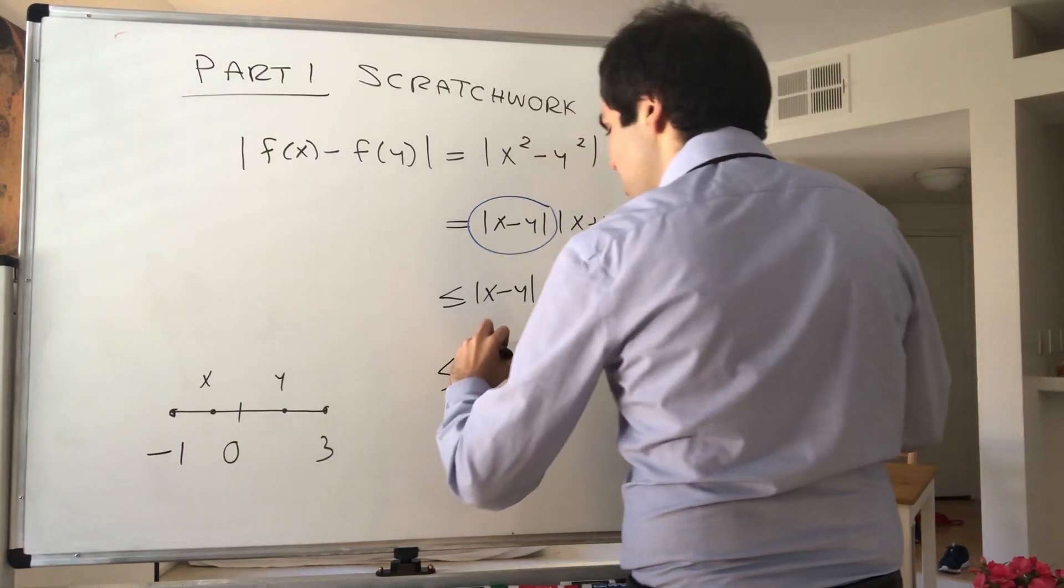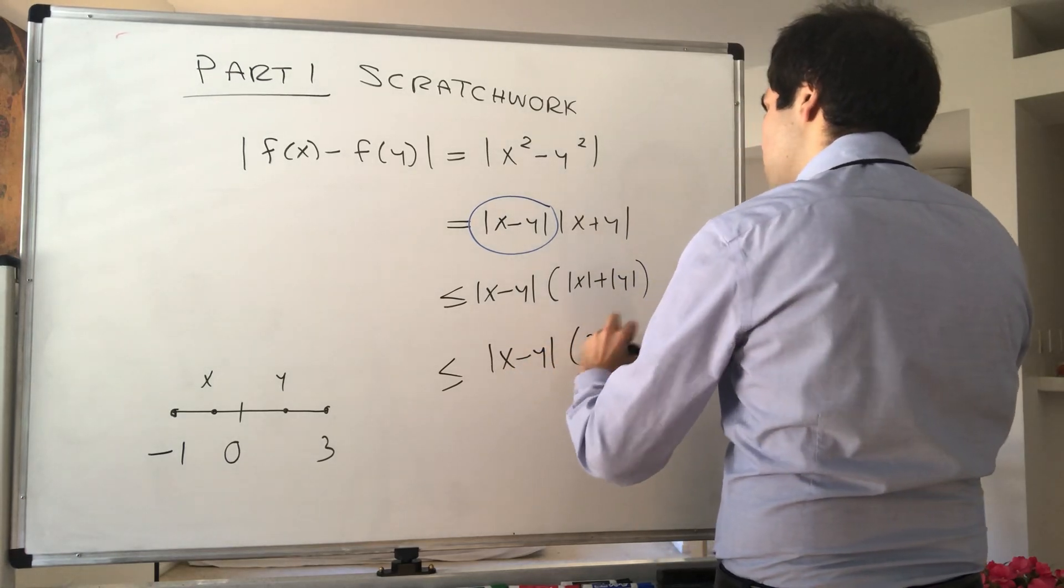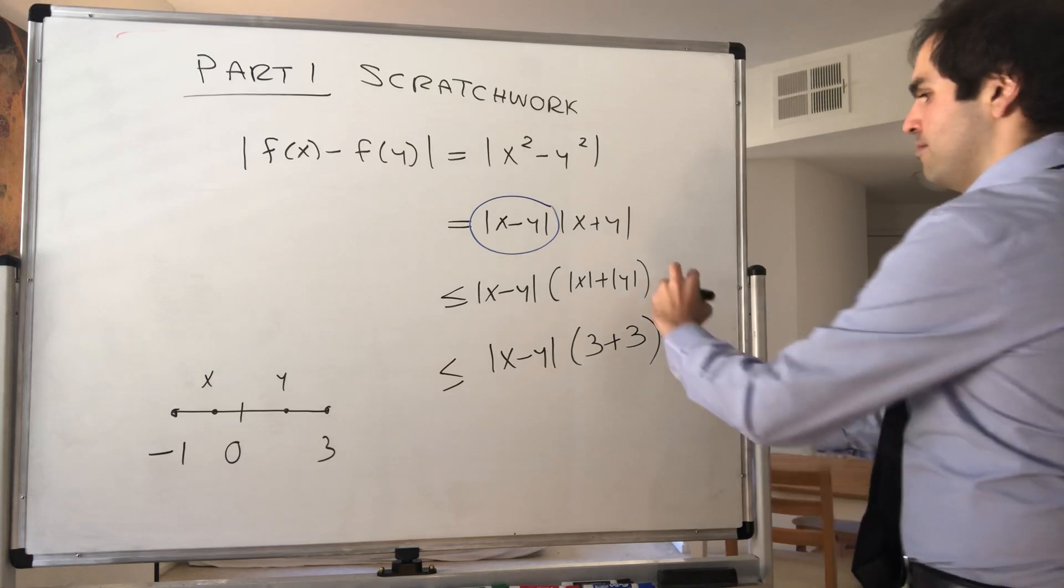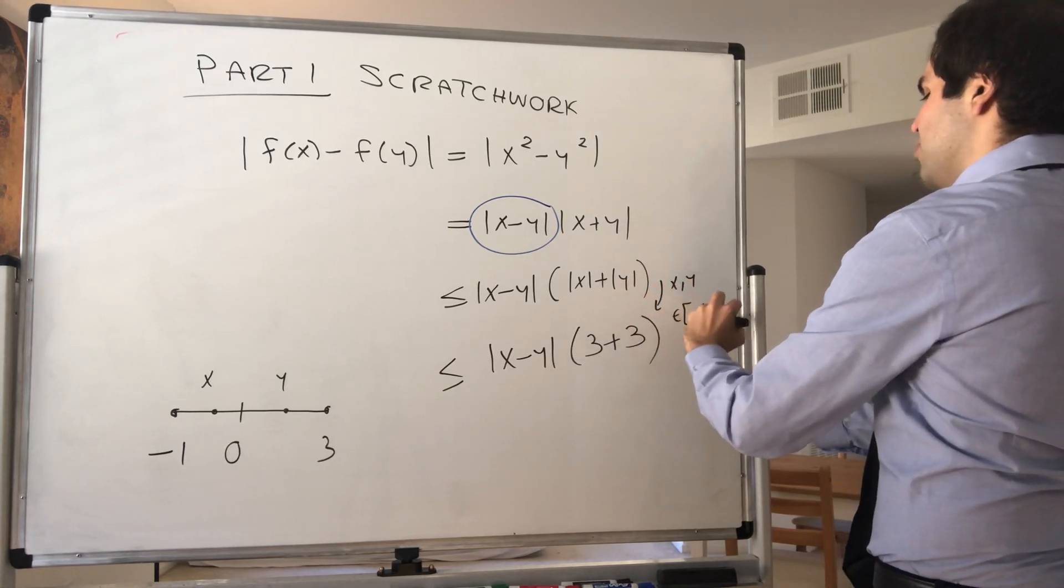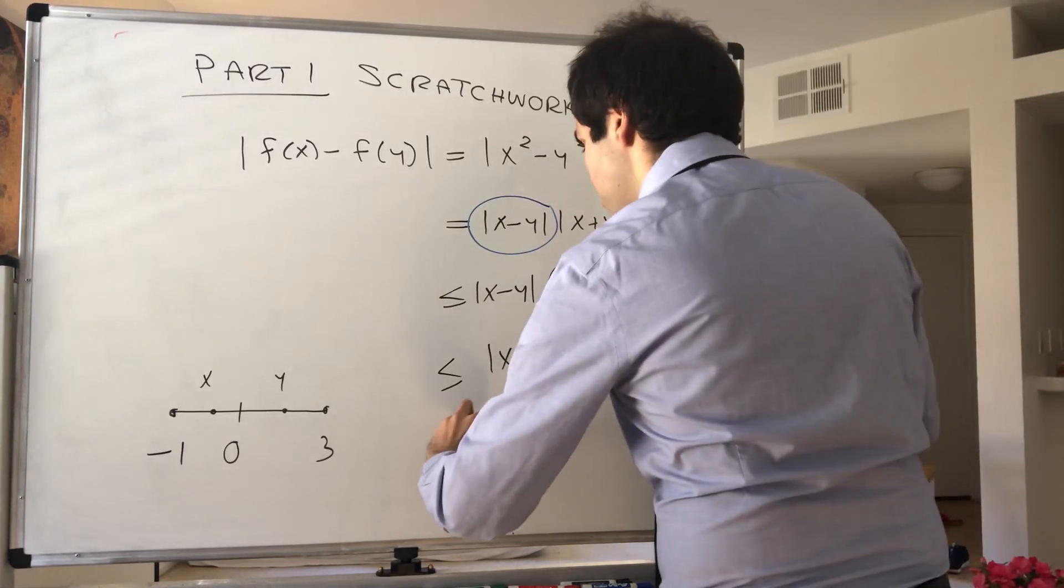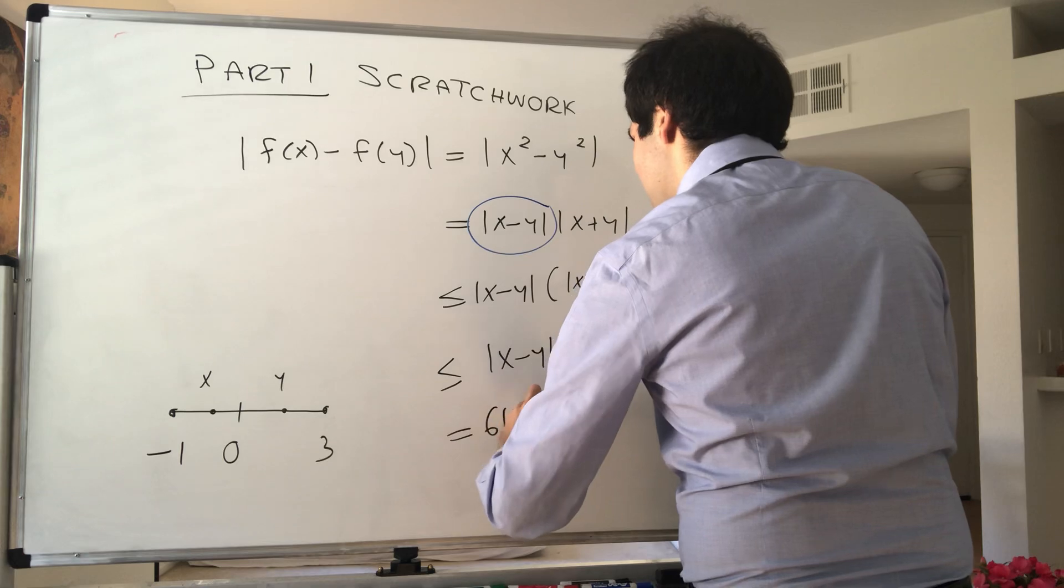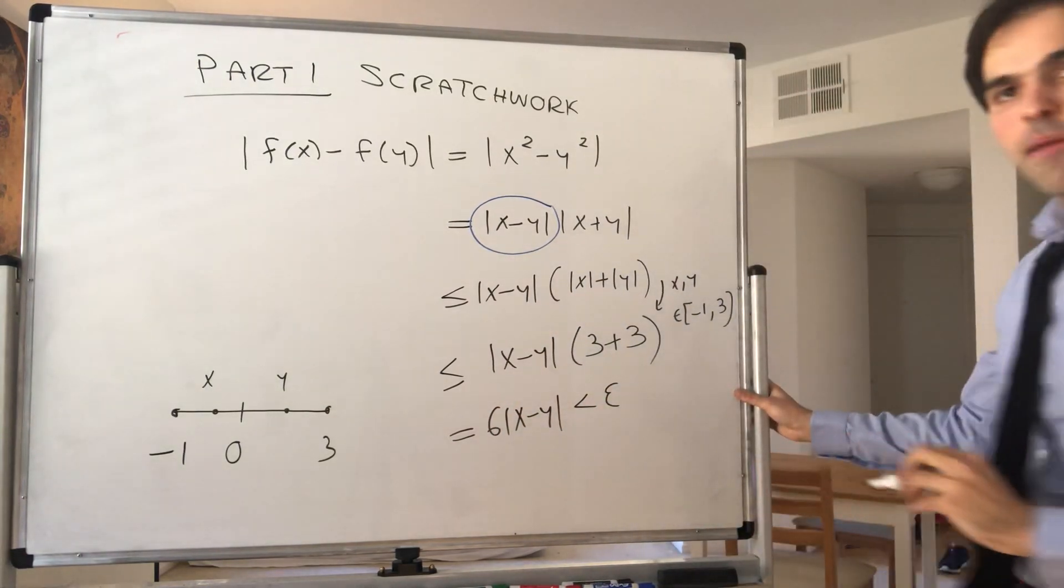So in particular, this becomes ≤ |x - y|(3 + 3). And again, just to emphasize here, I just used x and y are in [-1, 3]. But then 3 + 3 is 6. So this becomes 6|x - y|,